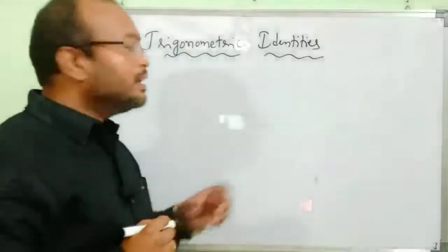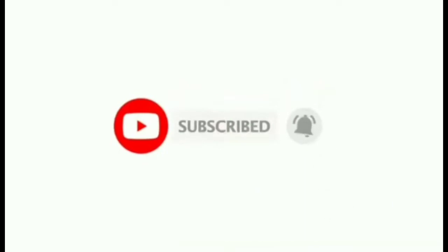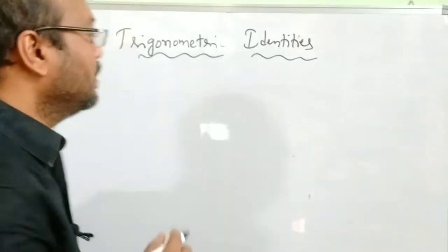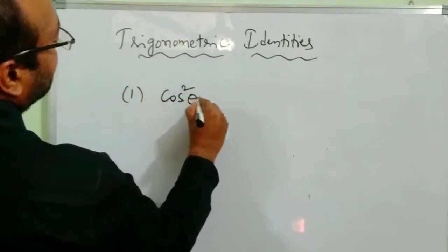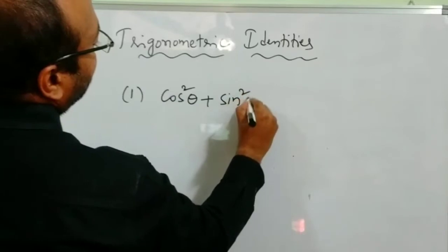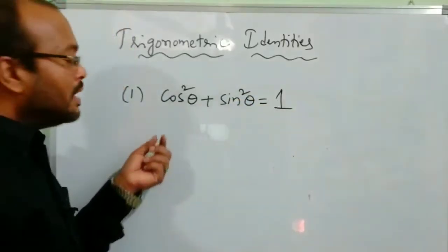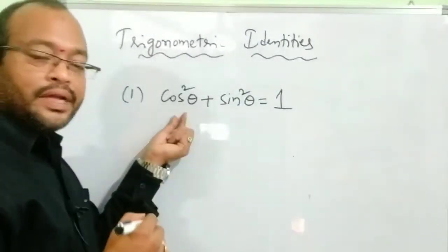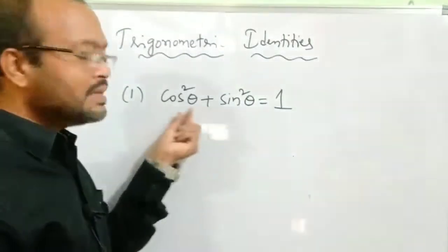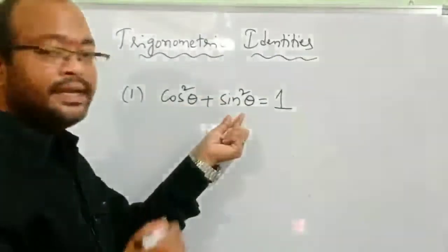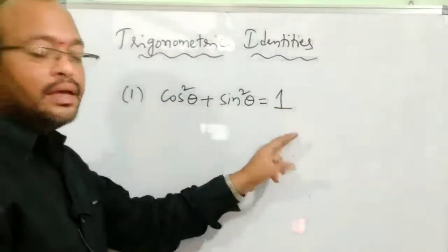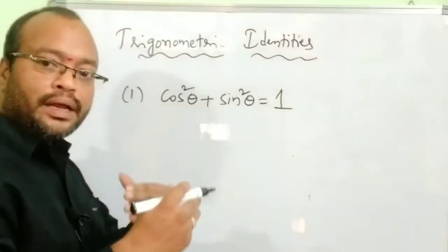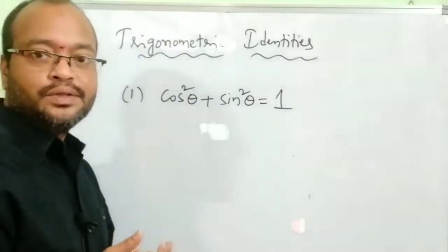What is a trigonometric identity? The first trigonometric identity is: cos²θ + sin²θ = 1. We already know that cos θ is a trigonometric ratio and sin θ is a trigonometric ratio. Cos θ is nothing but adjacent by hypotenuse, and sin θ is nothing but opposite by hypotenuse. The first identity is cos²θ + sin²θ = 1. If we know this identity, automatically we can get the remaining identities also.